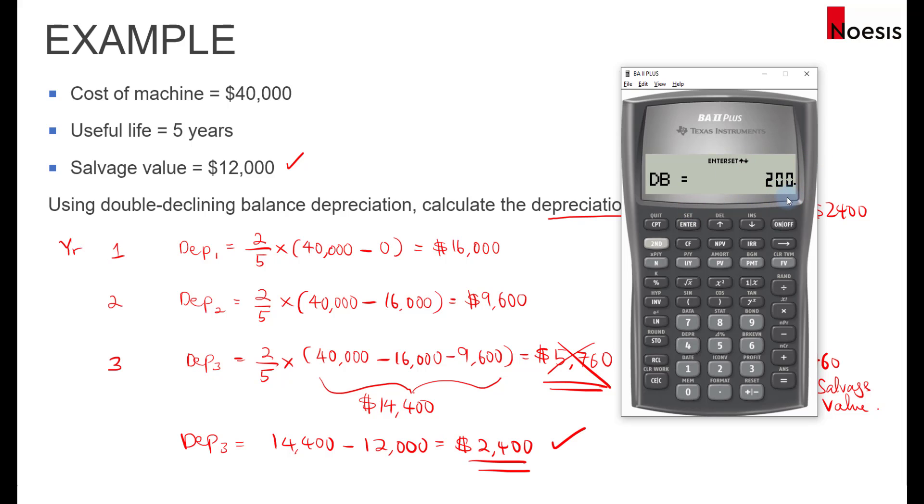Just leave it at 200. Don't try to set it at 2. If you set it at 2, that means 2%, but we are looking for double, double declining. So it's 200% or double factor.